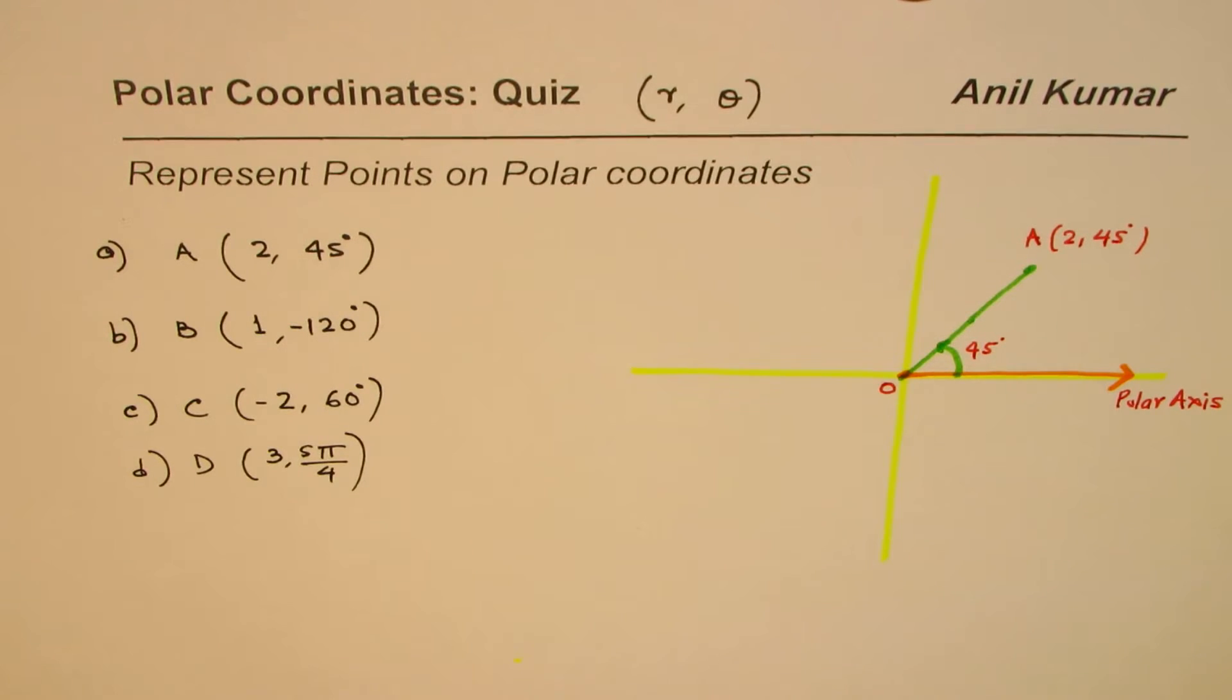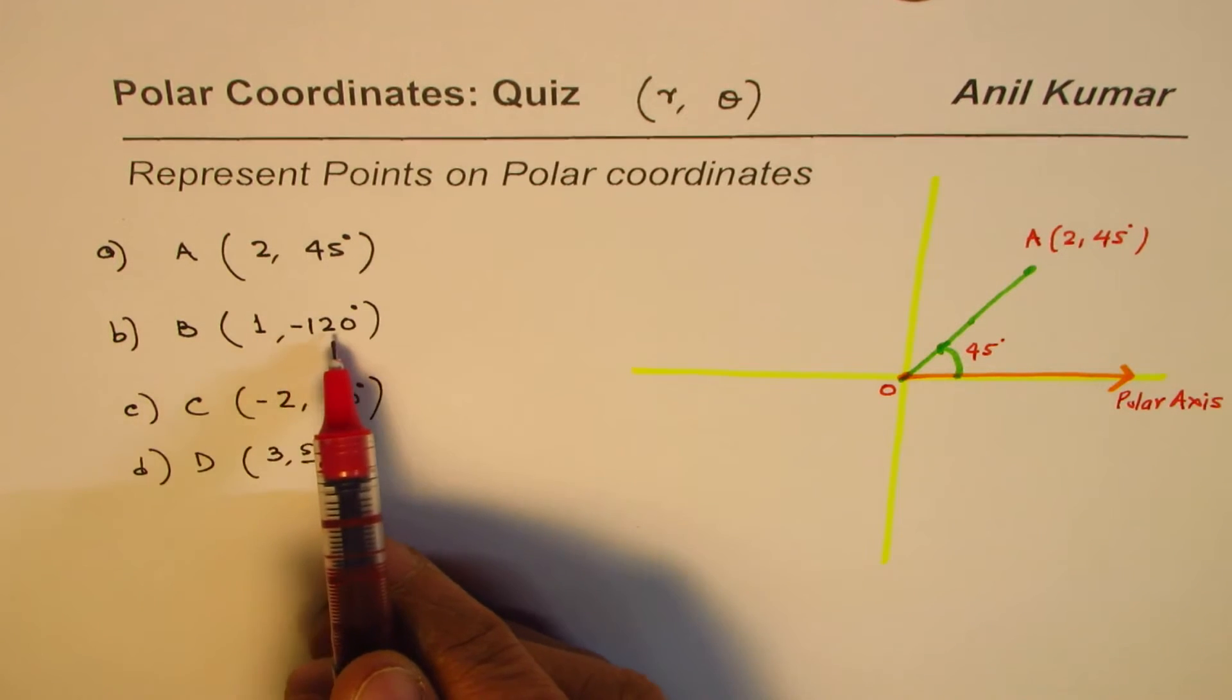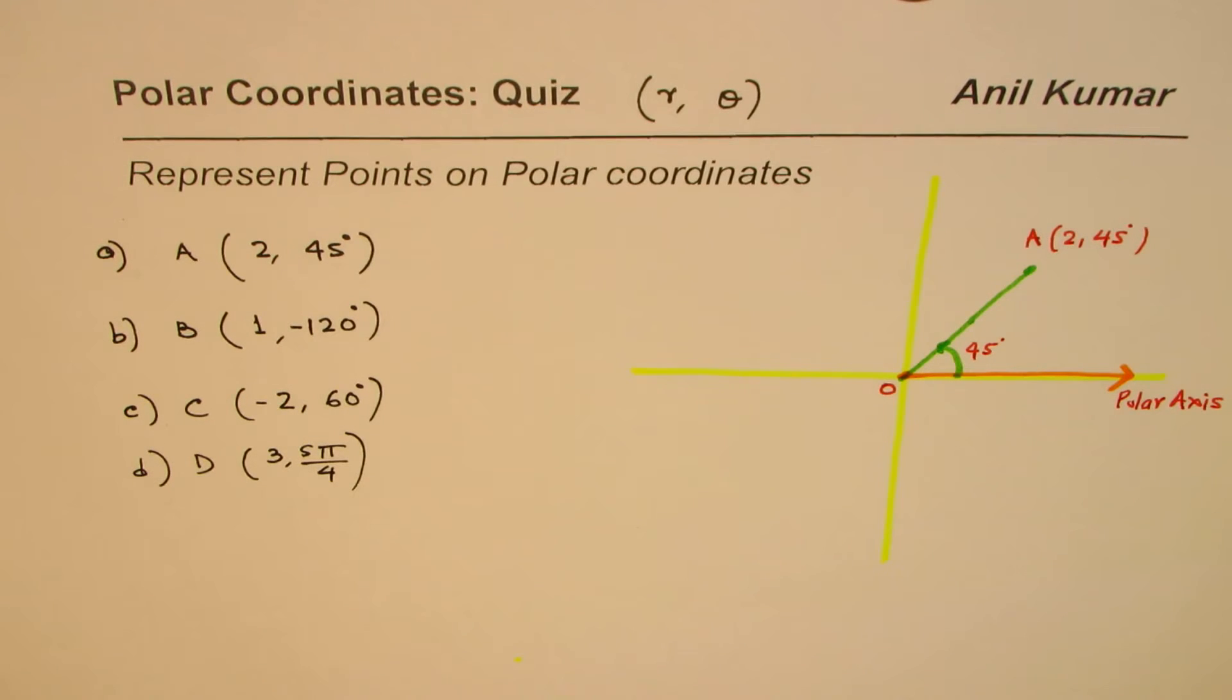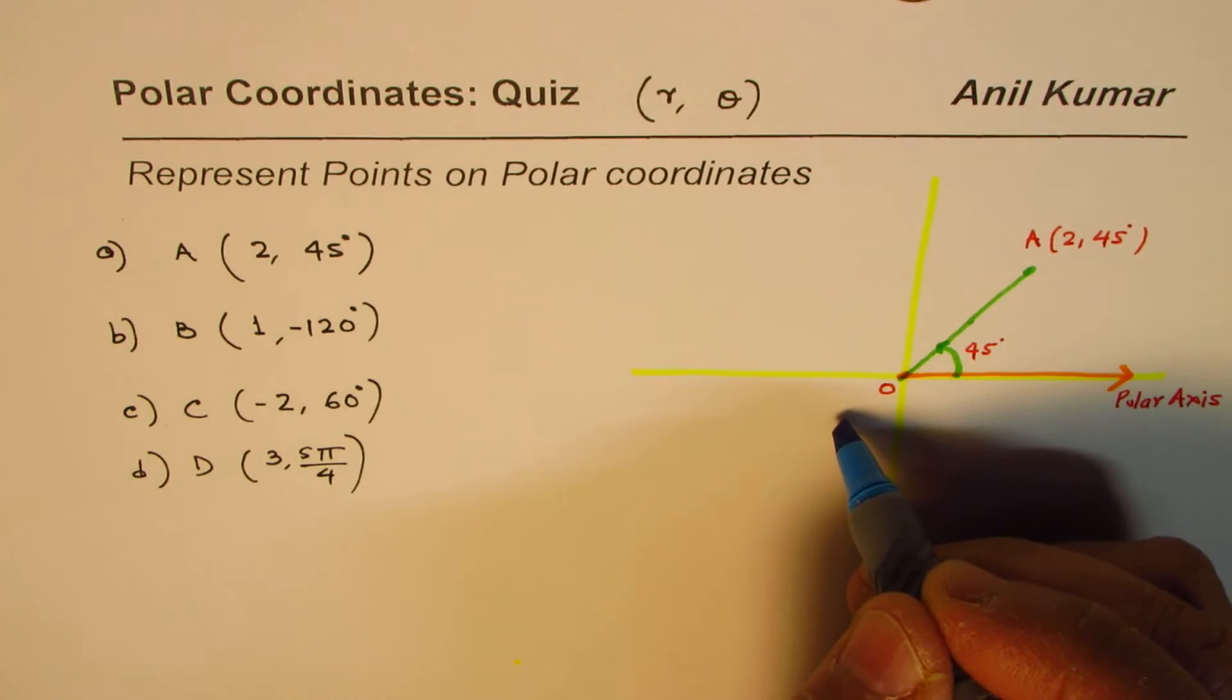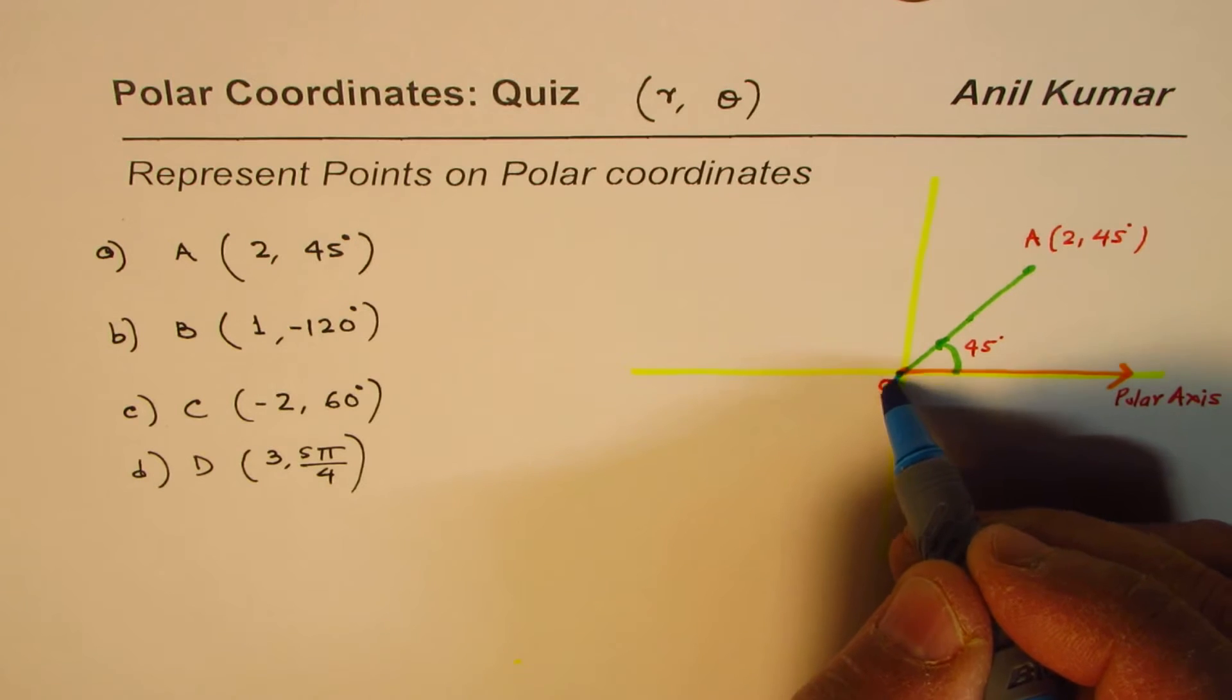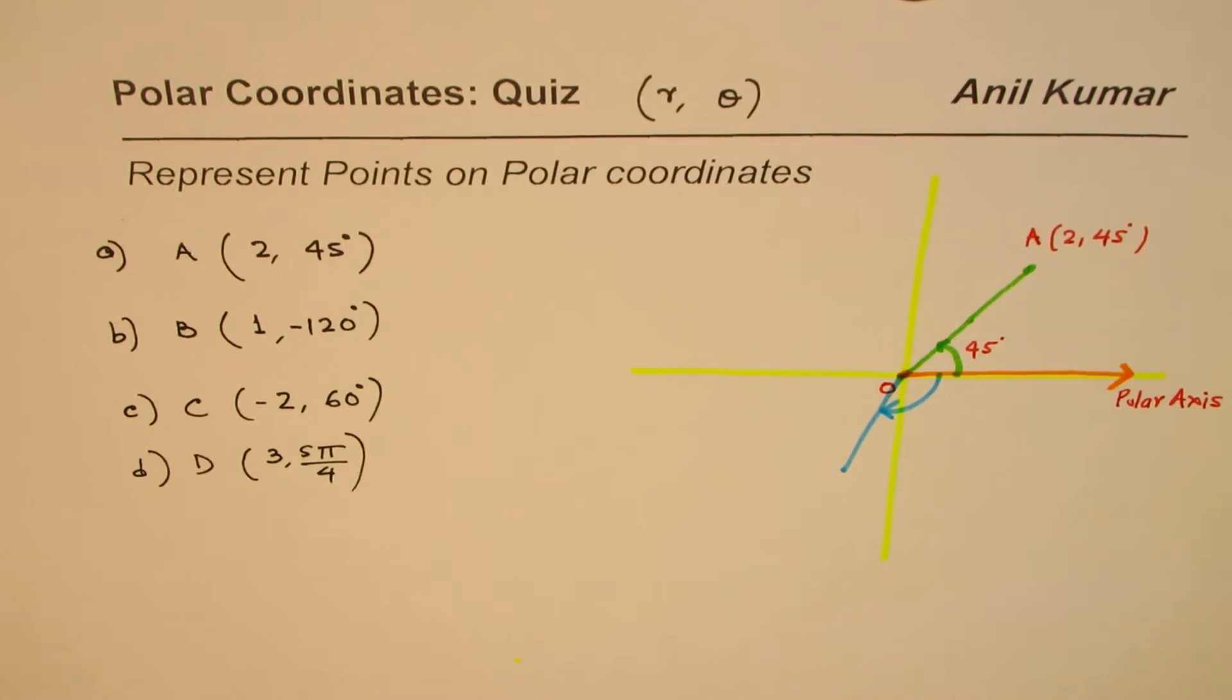B is (1, -120°). Now minus 120 means what? Negative, you know, is clockwise, right? So clockwise means 60 and 60 and 60, 120 degrees. So that will be kind of here. This degree here is 120 degrees for us, minus 120.